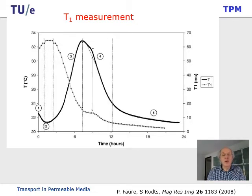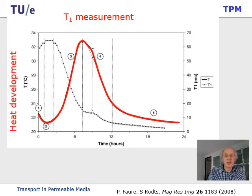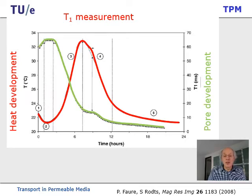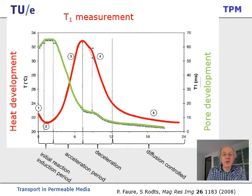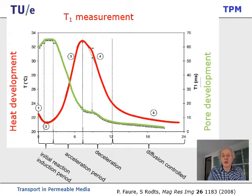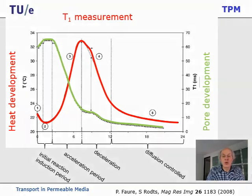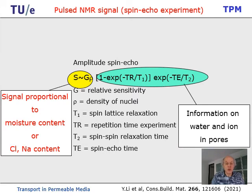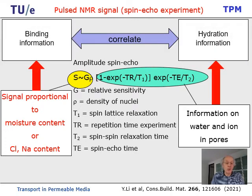Can we connect NMR data to real measurements we already know? Somebody has correlated the heat development during cement hydration to the T1 relaxation time, and you can really nicely see that they are correlated. Indeed, dividing it up, you can clearly see the acceleration period, deceleration, and diffusion-controlled period. So with NMR you can also identify all these different regimes during hydration. In summary, we get signal intensity, pore size distribution, structural information, binding information, and hydration information — all of which we would like to correlate.